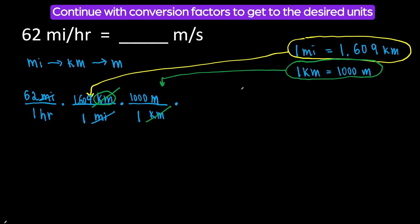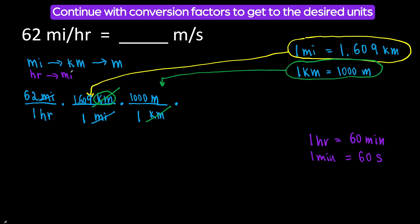Next thing, we are going to change hours to seconds. What conversion factors do we know? One hour is equal to 60 minutes, but we don't need minutes — we need seconds. One minute is equal to 60 seconds. So we are going to change hours to minutes and then to seconds.